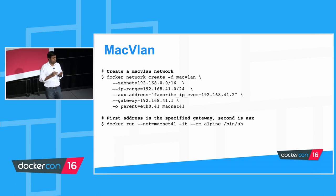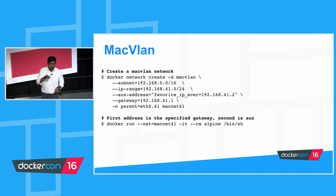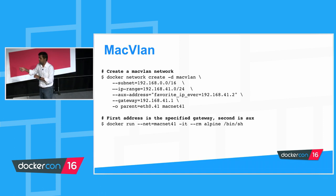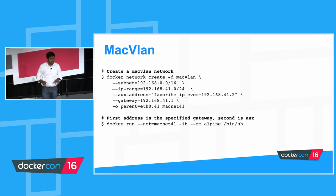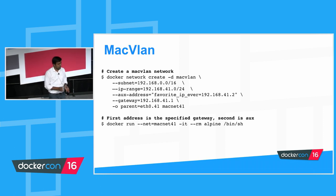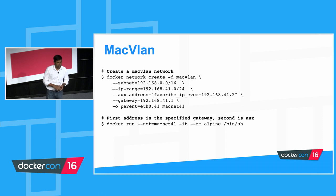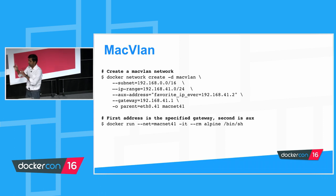With MacVLAN, containers are plumbed directly to the underlay — this gives the highest performance networking in our stack today because there's no NATing or port mapping. The MacVLAN driver wraps the kernel's actual MacVLAN driver. Linux kernel has supported MacVLAN since kernel 3.2, so it's well-tested and works really well. Those interested in underlay plumbing should check out MacVLAN. With that, let's go to the deep dive. Jana, take over.